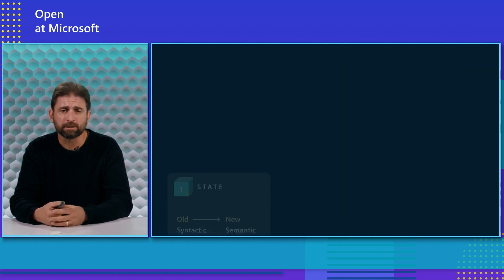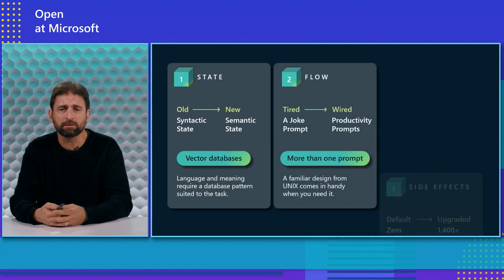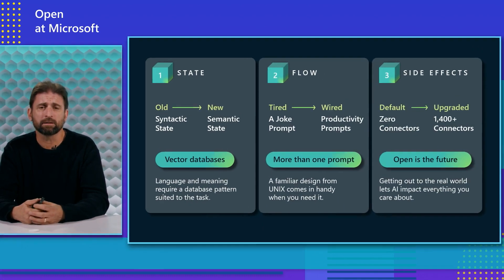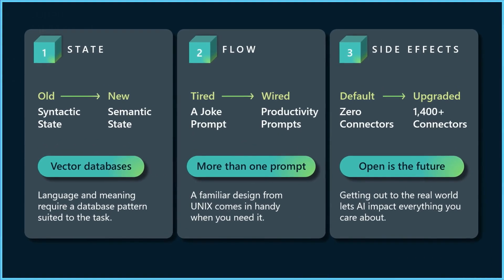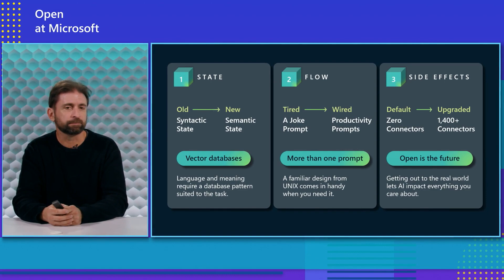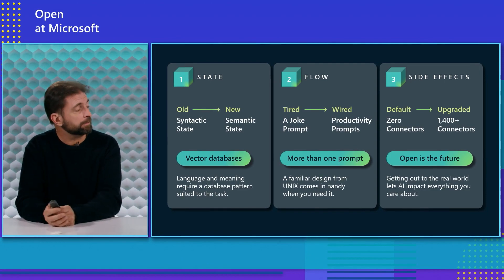So those are the pieces we talked about in the talk — state, flow, and side effects. Those are the beginnings of the tools you need to get to actual programs that involve and consume large language models. Later in the talk, we also talked about the engineering systems that go around it — how to do things like monitoring, QA, and regression testing — which is also interesting.